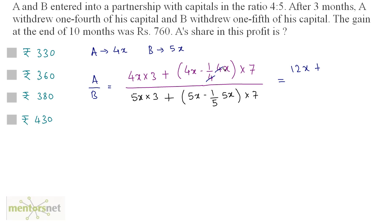4x minus x is 3x and 3x times 7 is 21x divided by we have 5x times 3 is 15x plus this 5 and this 5 goes out. 5x minus x is 4x. 4x times 7 is 28x.